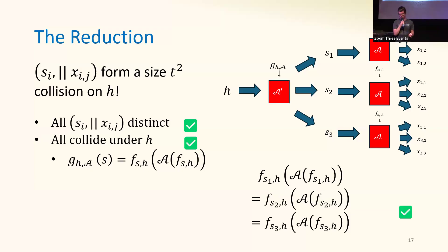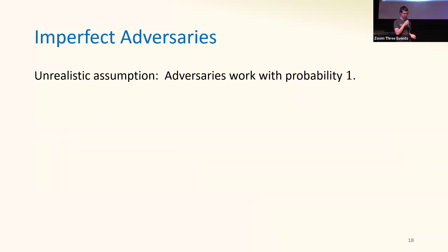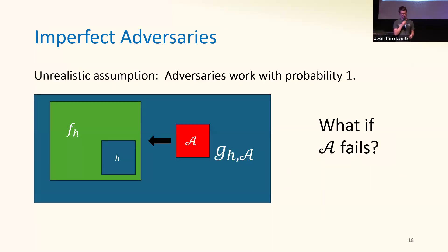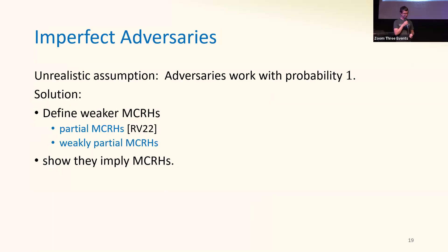This is the sense in which the result is non-constructive: we don't know which of those two families is going to be a T-MCRH, and we don't know how to define the G's without the adversary. Earlier I assumed the adversary is perfect. Normally in cryptography this isn't a problem, but here we're using the adversary in our construction of the functions G. So the question is how do we define G if the adversary fails? The solution is basically to define approximate MCRHs and then boost these to full MCRHs. The actual construction details involve resampling, but importantly, this is something that has to be dealt with when we use the adversary in the construction.